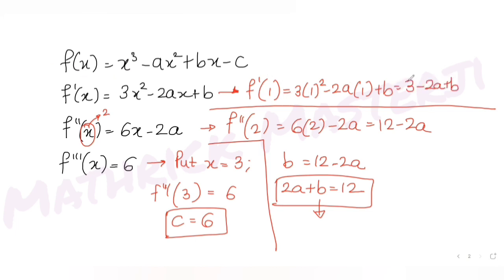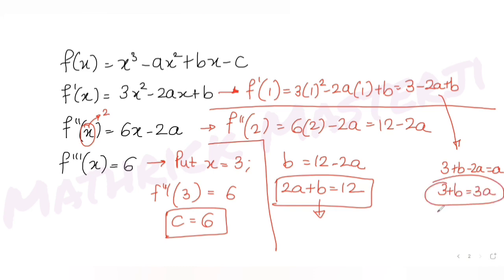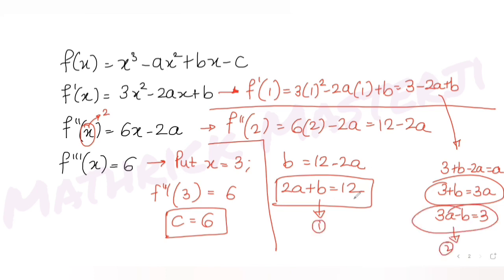Since f'(1) = a, we get 3 − 2a + b = a, which gives 3 + b = 3a, so 3a − b = 3. That is equation two. So we have two equations: 2a + b = 12 and 3a − b = 3.